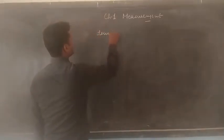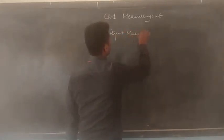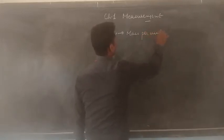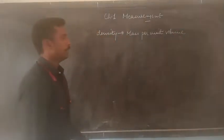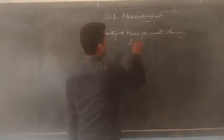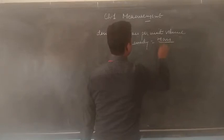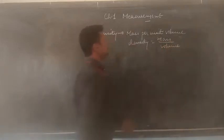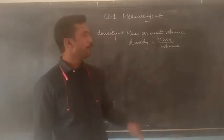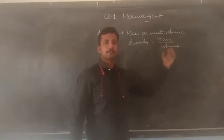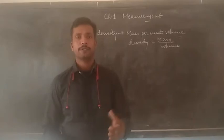Density is defined as mass per unit volume. We can write this as density equal to mass divided by volume. To calculate the density of an object, we have to divide the mass of an object by the volume occupied by the object. When you divide these two, you will get the density.